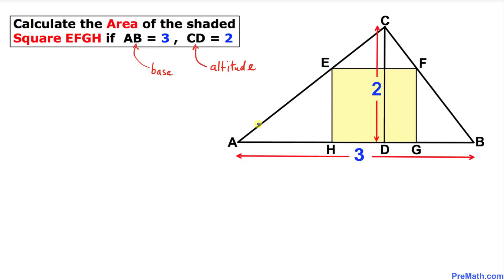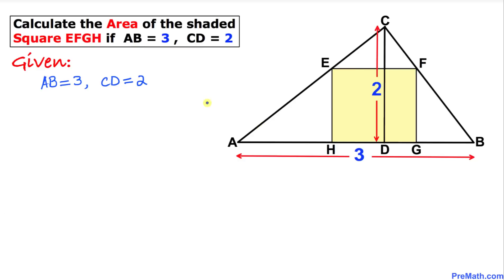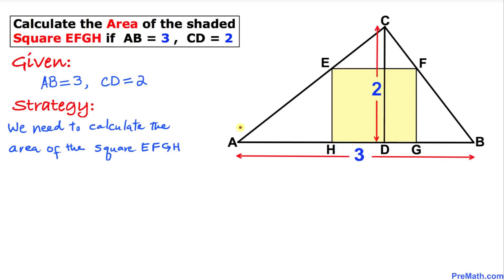Welcome to PreMath. In this video tutorial we are going to calculate the area of the shaded square EFGH, as you can see in this figure, if AB the base equals 3 and the altitude CD equals 2. The information given to us is AB equals 3 and CD equals 2, and here is our action plan.